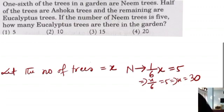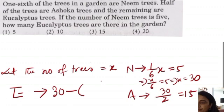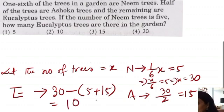And Ashoka trees, half of the trees are Ashoka trees. That means we divide 30. So Ashoka is equal to 30 by 2, is equal to 15. Now Eucalyptus trees we can find out. Eucalyptus trees, how much? Total, we will minus neem and Ashoka. Neem is 5, Ashoka is 15. So Eucalyptus trees will be 30 minus 20, that means 10. Then what is it? Option 2. So 2 is the correct option.